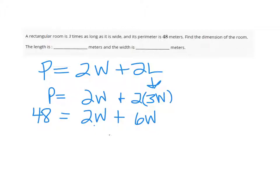So combining like terms, we get that 8W equals 48, divide both sides by 8, and W is equal to 6.